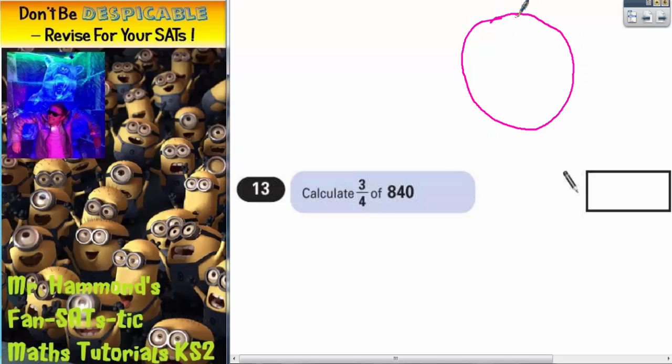If we start with a circle and split the circle into quarters, we could even think of this as a pizza if we want to. So, our whole pizza is worth 840.